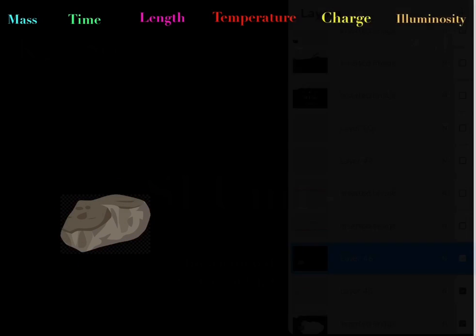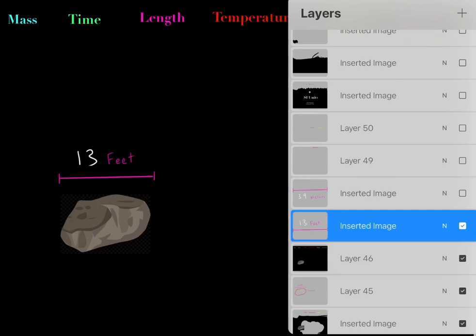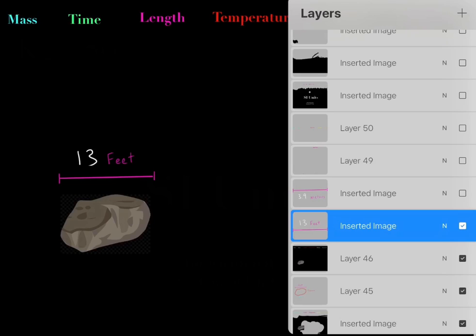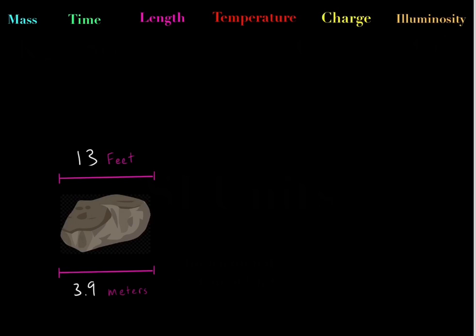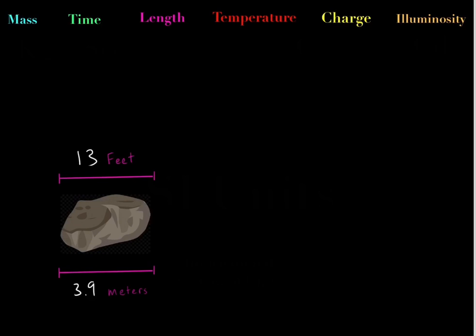However, there's a problem. In the United States, we might say this rock has a length of 13 feet. But over in Europe, they would say this rock has a length of 3.9 meters. These both represent physically the exact same thing — the length of this specific rock. But in the US we use units of feet, while in Europe they use units of meters.